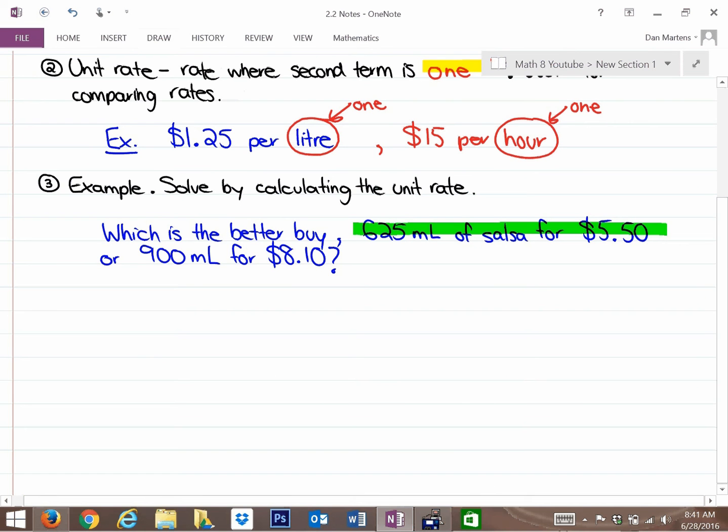That's a unit rate. So we would like to know how much money per milliliter. Because I can't compare these right now because they're different volumes. One volume is 625 milliliters and the other volume is 900 milliliters. So if I can figure out how much it costs per 1 milliliter for each of these, then I can compare them as a unit rate.